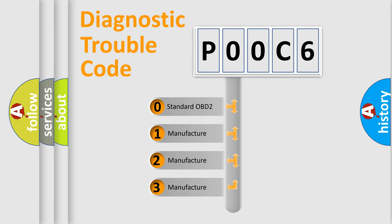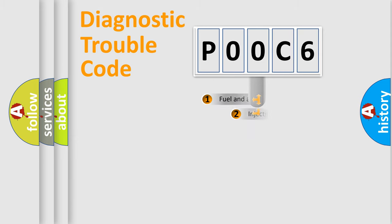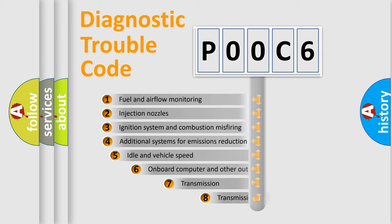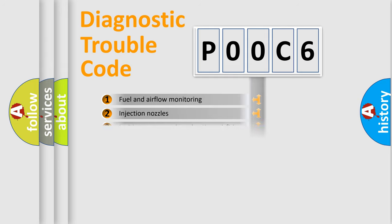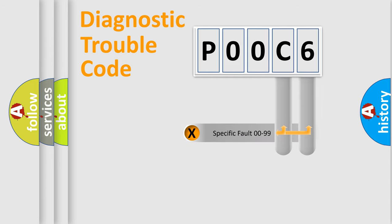If the second character is expressed as zero, it is a standardized error. In the case of numbers 1, 2, or 3, it is a more specific expression of the car-specific error. The third character specifies a subset of errors. The distribution shown is valid only for the standardized DTC code.